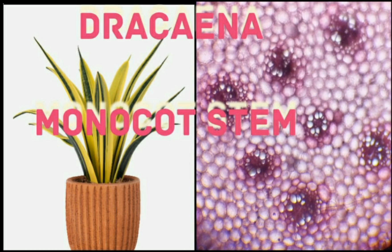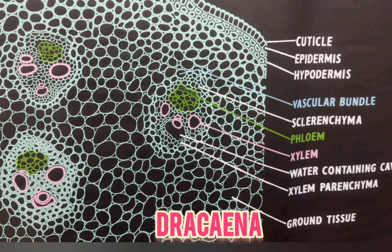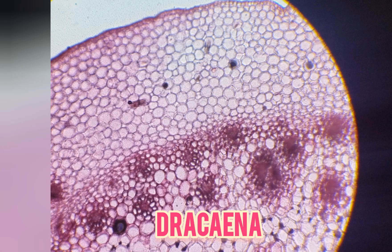Dracaena can be considered as a typical example of anomalous secondary growth in monocots. Its young stem has a typical monocot structure with outer epidermis, sclerenchymatous hypodermis, and a large number of closed collateral vascular bundles embedded in the parenchymatous ground tissue.